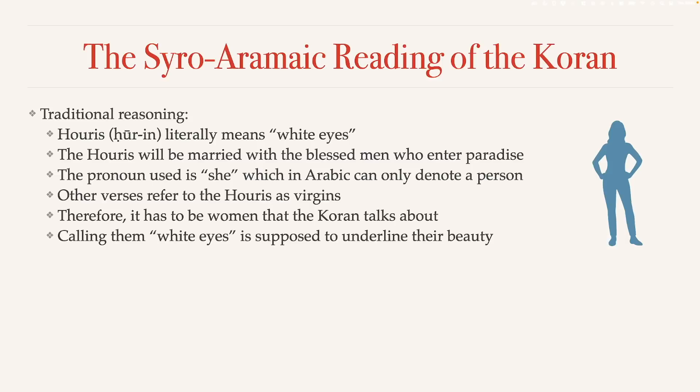That's actually an interpretation added by translators, because literally the text only says Hurin, which Muslims say means white eyes. The interpretation of 'dark eyes' is believed to be the intended meaning because supposedly the virgins' eyes are so big you can see a lot of white in them, underlining dark irises — showing how beautiful the Huris are because big eyes are considered beautiful. But the Quran clearly only says 'white,' not 'dark.' That's something interpreters bring to the text that is not in the text itself.